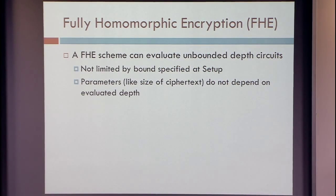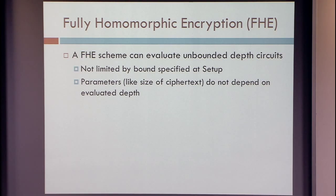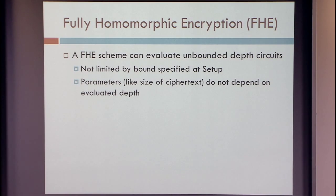So what we want to have — so far we had an encryption scheme that can evaluate circuits of bounded depth or complexity, and we could make the parameters as large as we want to get any polynomial depth, but it's still limited. Once you set your parameters, they're fixed, and you can only evaluate functions up to some complexity. What we want is a fully homomorphic encryption where you can evaluate unbounded depth circuits, essentially any circuit, not limited by the size of parameters that you chose.